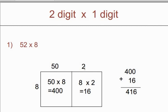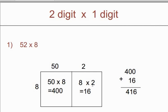We write 50 plus 2 here. Now in this particular box, you have to take 50 from here and 8 from here and make a multiplication of 50 with 8. So 50 by 8 we will get answer 400. Same way in this particular box, you have to take 2 from here and 8 from here. So 8 multiply by 2 we will get 16.